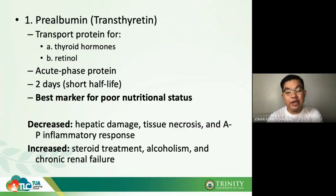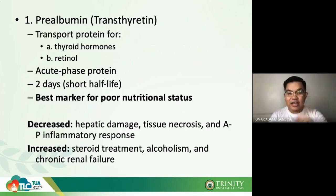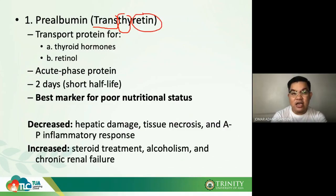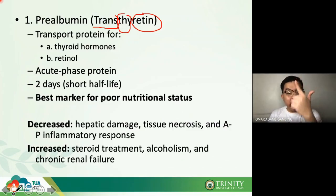The first plasma protein is prealbumin, also known as transthyretin. Prealbumin is a transport protein for thyroid hormone and retinol — that is why it is called transthyretin: it transports thyroid hormone and retinol, which is vitamin A.